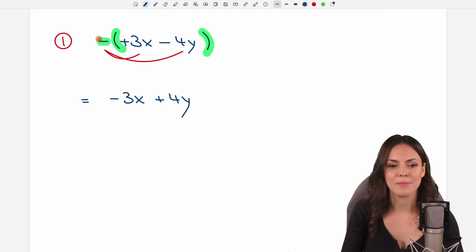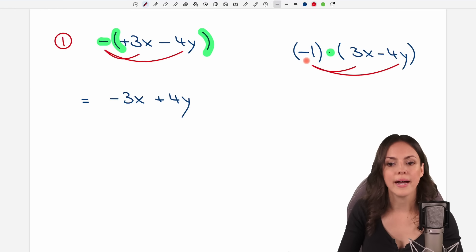Why is it that this minus here changes the signs? Well, you can always write a minus as a negative 1 that is multiplied by your parentheses. So instead of just having a minus here, you can write it as this and maybe it helps you a little bit more to understand that you have to multiply each element by a negative 1. Negative 1 times 3x equals negative 3x and negative 1 times negative 4y equals plus 4y.